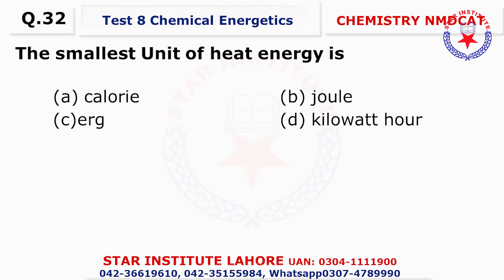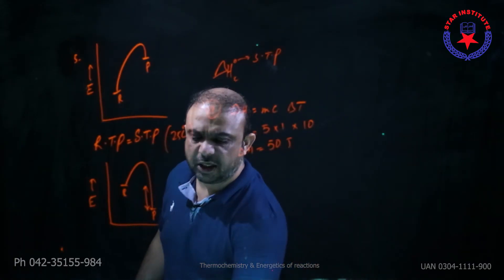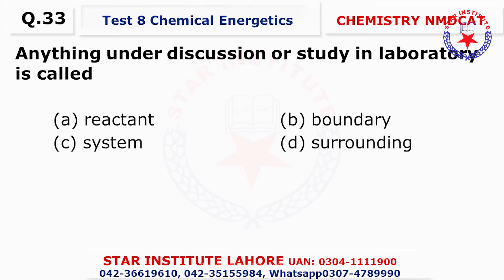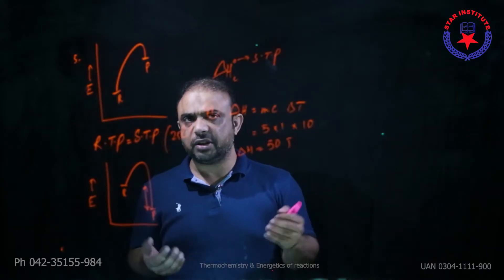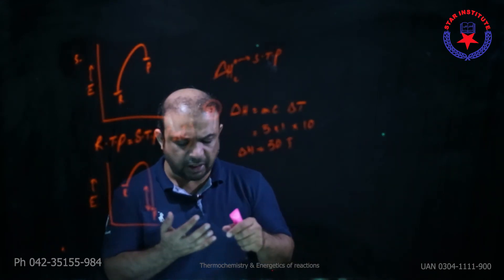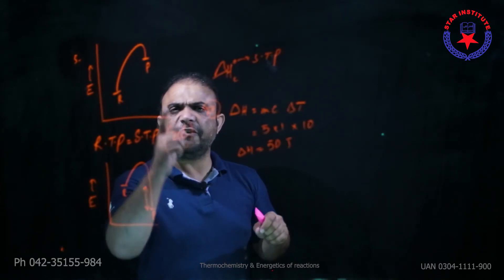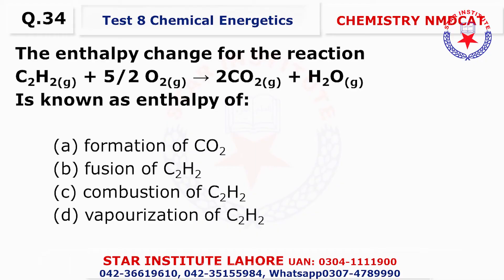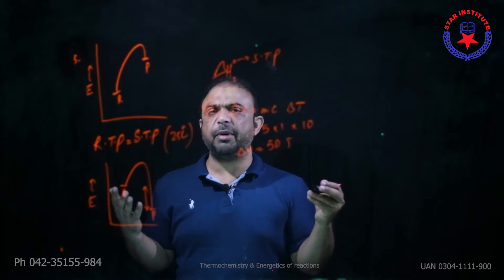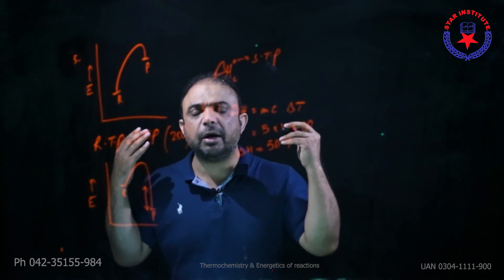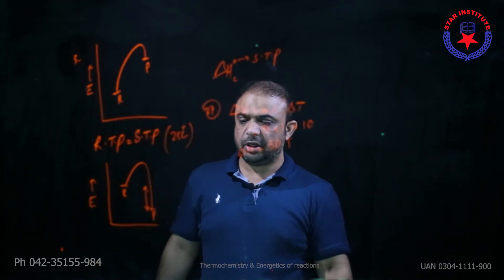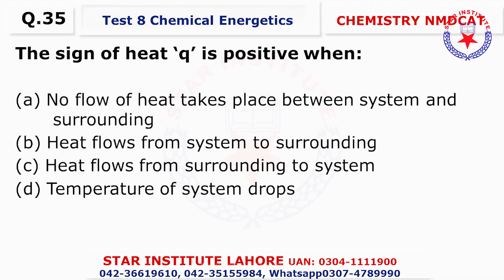Question number thirty-two covers the smallest unit of energy. Question number thirty-three: Anything under discussion or study in the laboratory is said to be the system — anything which is being observed, monitored, or undergoing a physical or chemical change is said to be the system. Question number thirty-four: Looking at the reaction carefully — this hydrocarbon is going to carbon dioxide and water, so the only possible answer is enthalpy of combustion. Choice C.